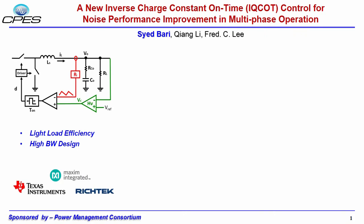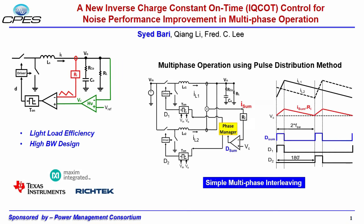Today constant on time control is widely used in the industry for better light load efficiency and high bandwidth design capability. In multiphase operation, pulse distribution method is popular because of its simple interleaving process.